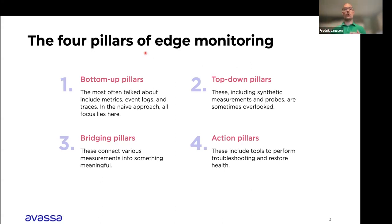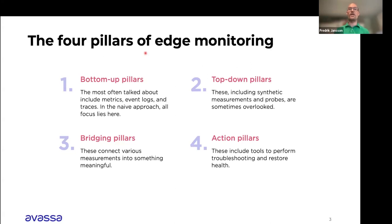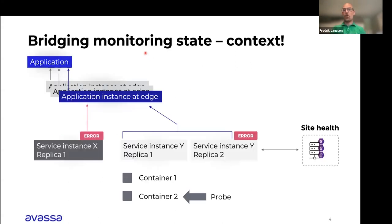That is the second pillar — more of a top-down or black-box approach. The third pillar is really about bridging the two: you will always have logs, you may have these probes, and it's about bridging that using the best of both worlds to figure out what's going on in the system. The fourth pillar is: does your system allow you to take action? If you have a problem, how can the system help you identify and fix the problem, and later get a fixed version of the code out there? That is pillar four — being able to act on what's happening in the system.